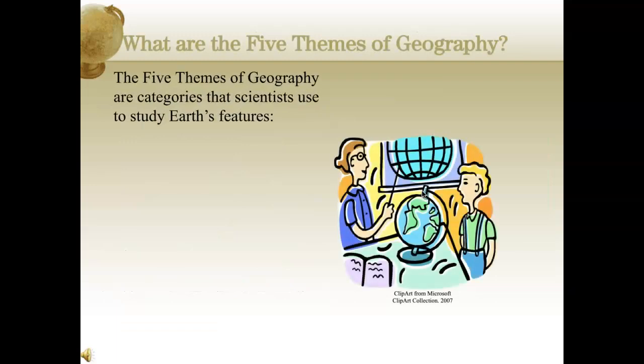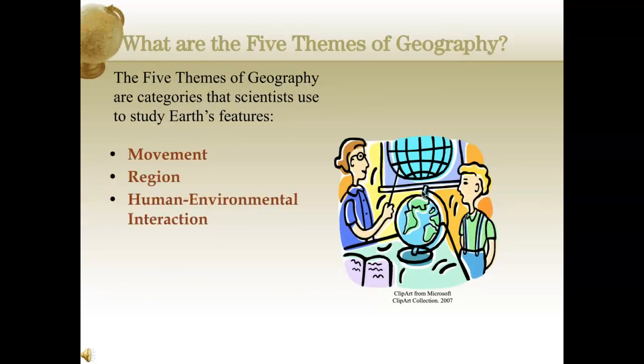So what are the five themes of geography? The five themes of geography are categories that scientists use to study the Earth's features. They are movement, region, human-environmental interaction, and location and place. Together these five themes help us define and describe unique characteristics under these domains to help people get a better sense of where in the world we're talking about.